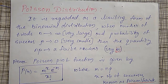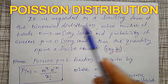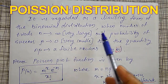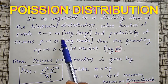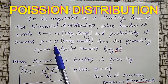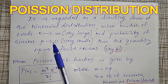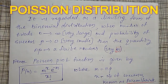I am explaining how to solve the problems of Poisson distribution. Before solving the examples, let me briefly describe Poisson distribution. Poisson distribution is the limiting form of a binomial distribution when the number of trials n tends to infinity and the probability of success p tends to zero. As p tends to zero and n tends to infinity, we use Poisson distribution.